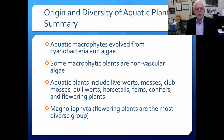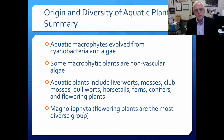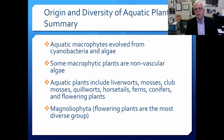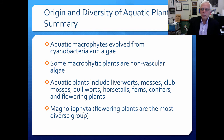To summarize the information from this session: the aquatic macrophytes evolved from cyanobacteria and algae via the green algae, then formed a polyphyletic group that re-engaged aquatic environments. Vascular plants re-invaded aquatic ecosystems from the terrestrial environment after evolution in that environment. Some macrophytic plants are non-vascular algae — things like Chara and Nitella — and there are also some bryophytes. Aquatic plants include liverworts, mosses, club mosses, quillworts, horsetails, ferns, conifers, and the flowering plants — the Magnoliophyta — which are by far the most diverse group.